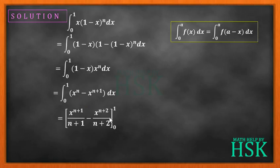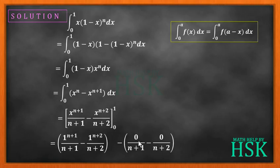The limits are from 0 to 1. We are going to now apply the limits, and this would be equal to 1 raised to the power n plus 1 upon n plus 1 minus 1 raised to the power n plus 2 upon n plus 2, placing the upper limit, minus the lower limit 0.